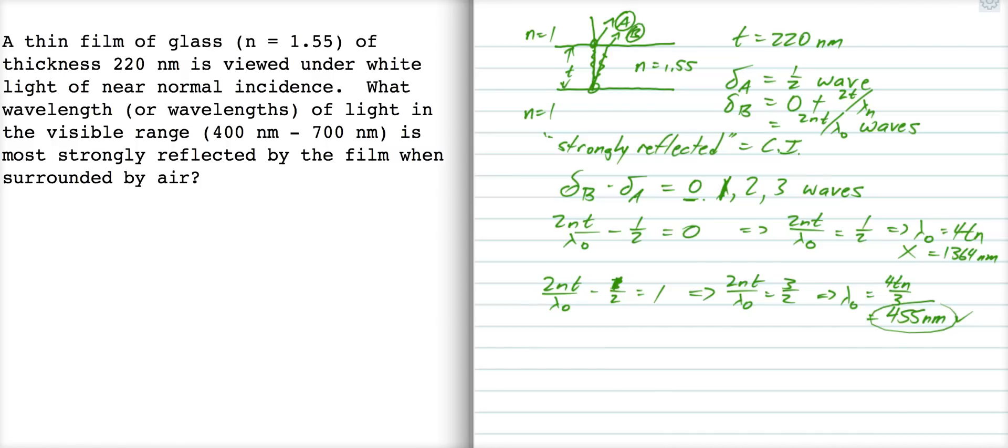Let's try one more. 2nT over lambda naught minus a half equals 2. Now, that gives us 2nT over lambda naught equals 5 halves, or lambda naught is equal to 4TN over 5, which is 273 nanometers, and that's no good. Right, and so any solution we try after that, if we set this equal to 3 or 4 or 5, we're going to get a smaller lambda naught. So the only lambda naught that's going to occur in the visible range is 455 nanometers, so that's going to be our only solution for this problem.